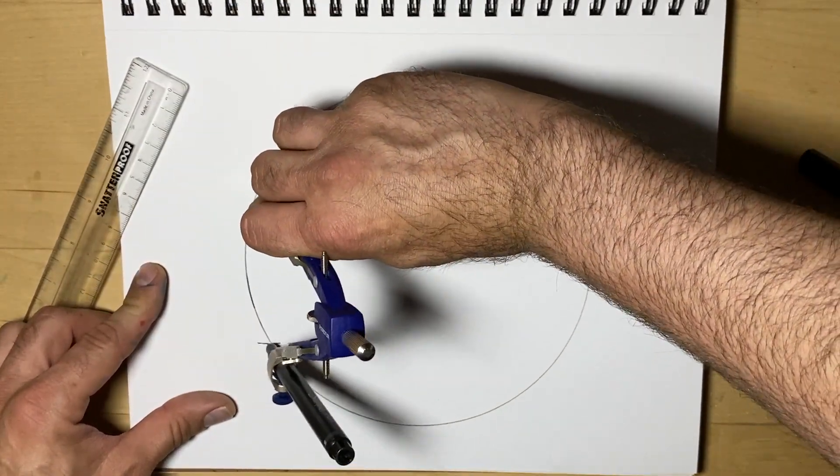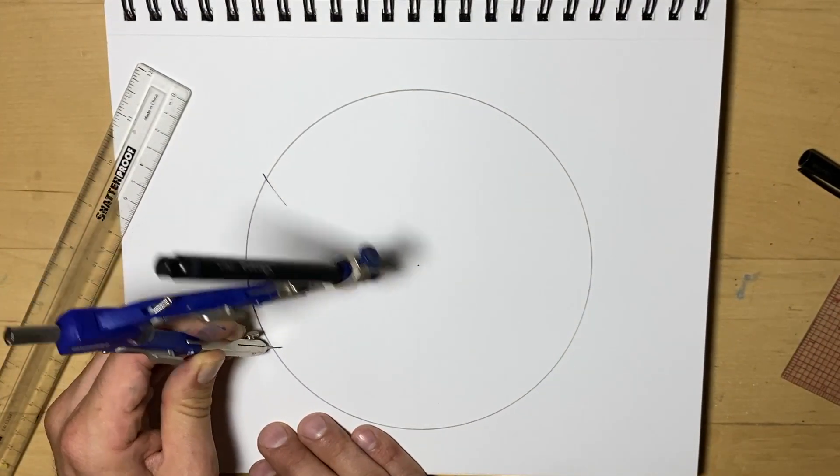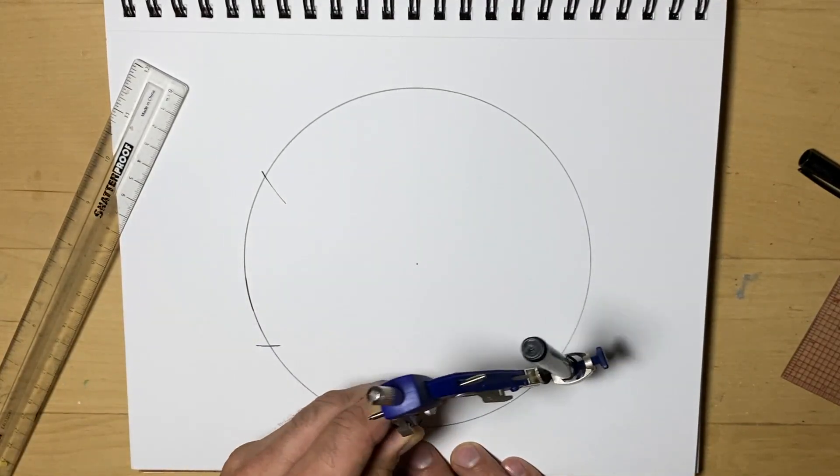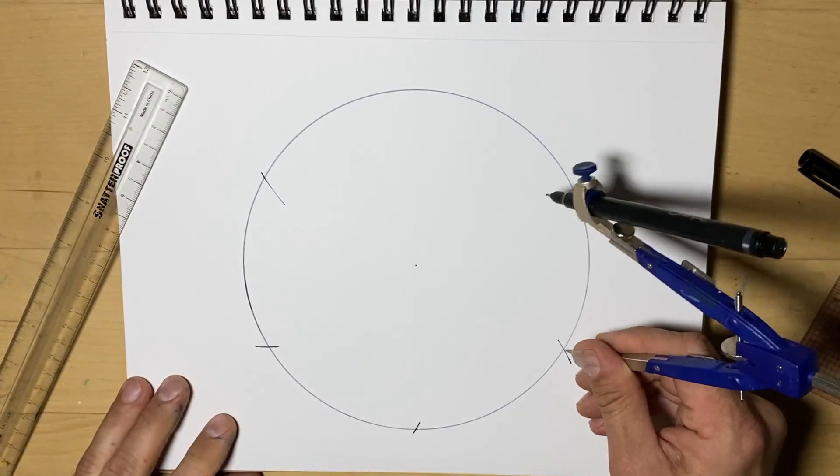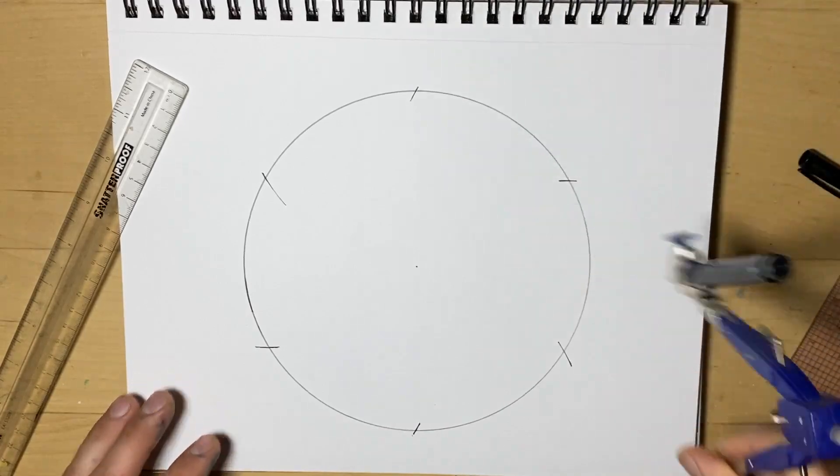And some of you familiar with geometry already know that six markings will fit or six circles will fit around a circle of the same size. So I'm going to make these markings, but we're only going to use the first three.